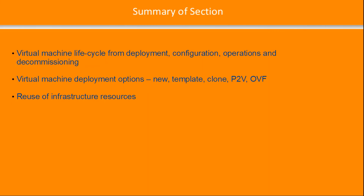We looked at virtual machine deployment options including new, creating from template, clone, converting physical to virtual, and OVF. Finally, we covered reuse of infrastructure services once the virtual machine is decommissioned. Typically the CPU and memory are returned back to the resource pool; however, a disk may be reused depending on the use case and requirement.